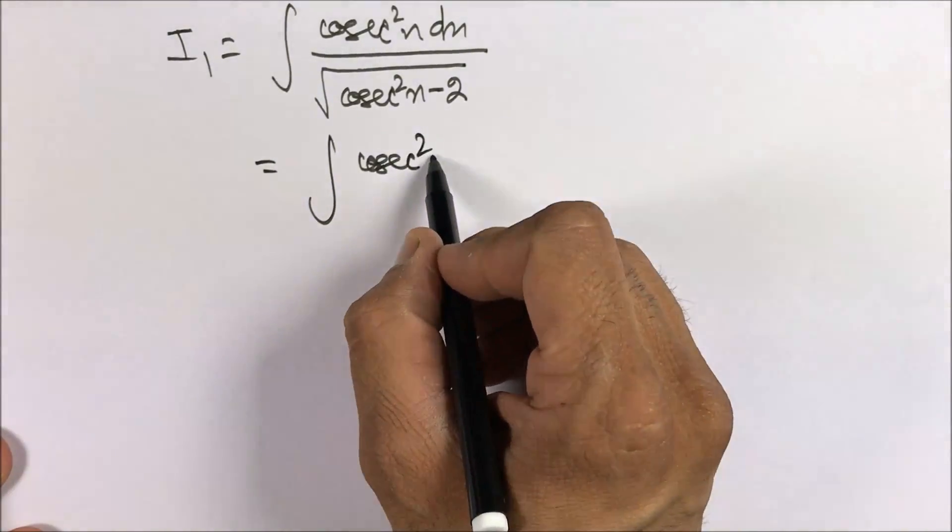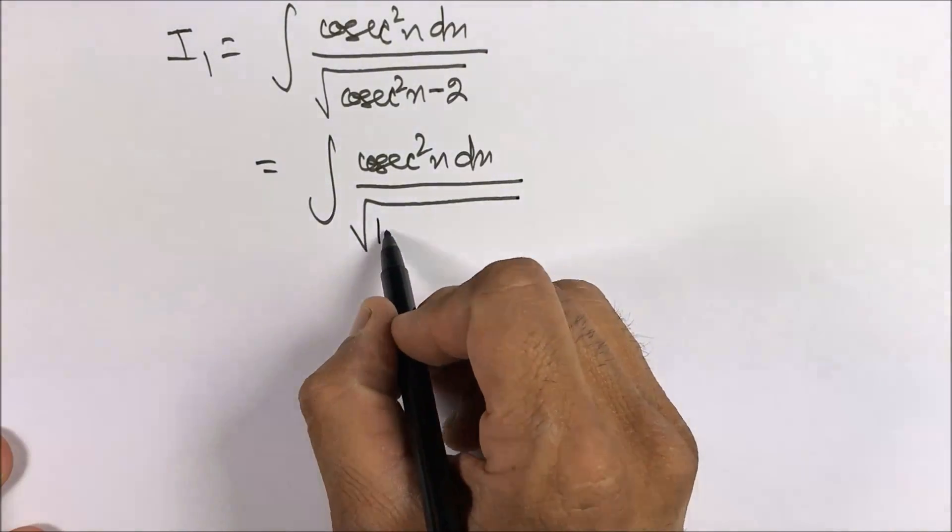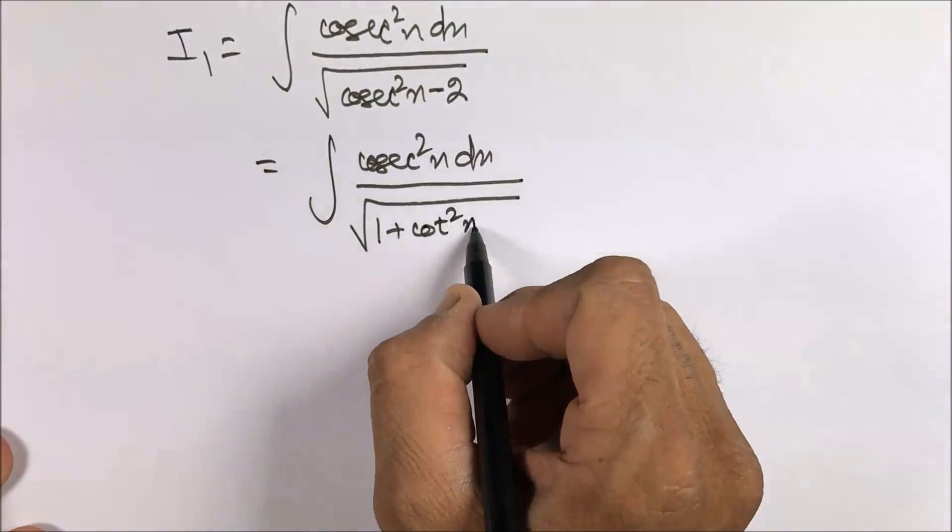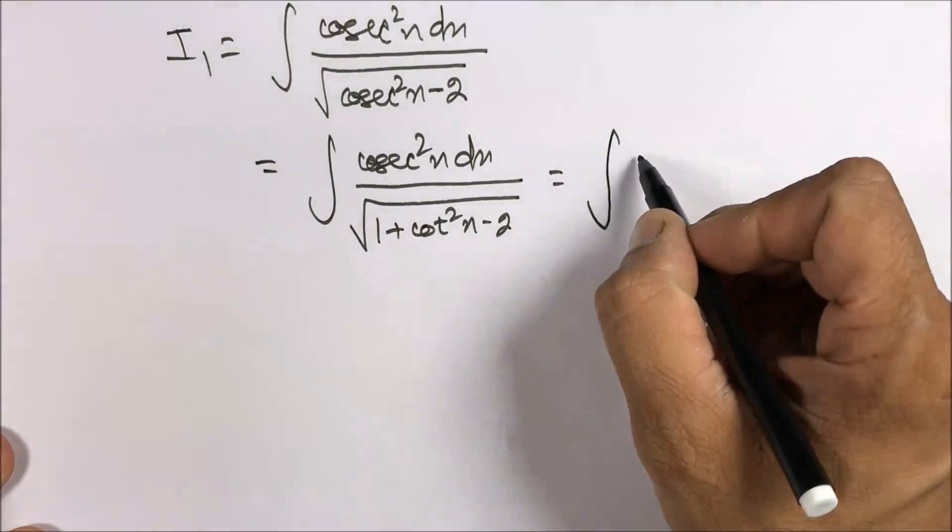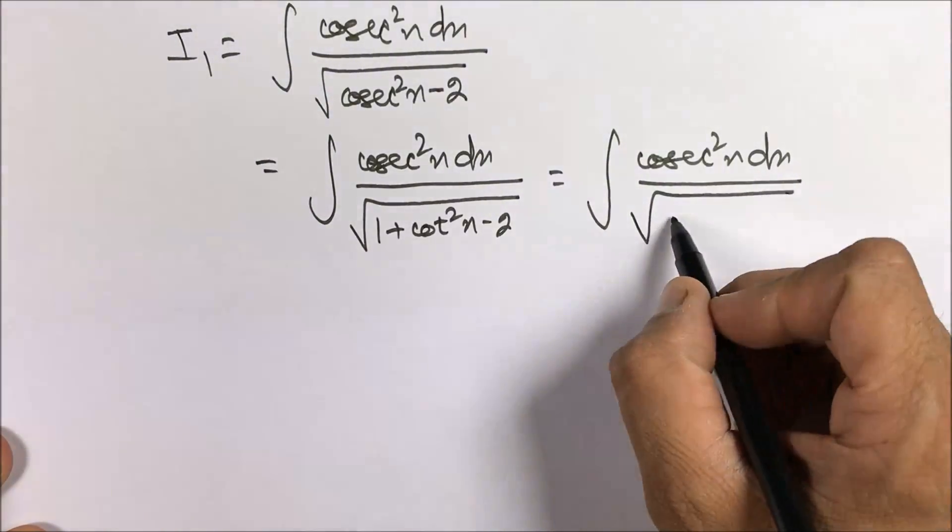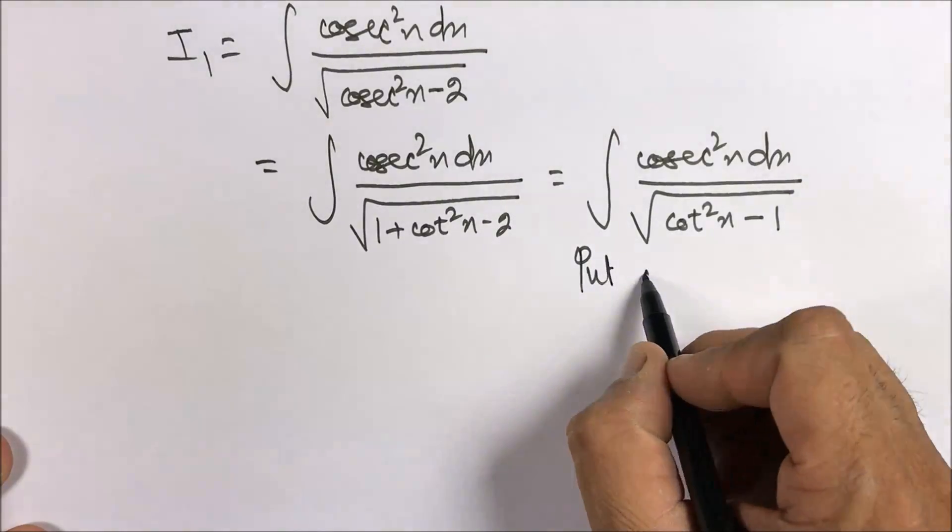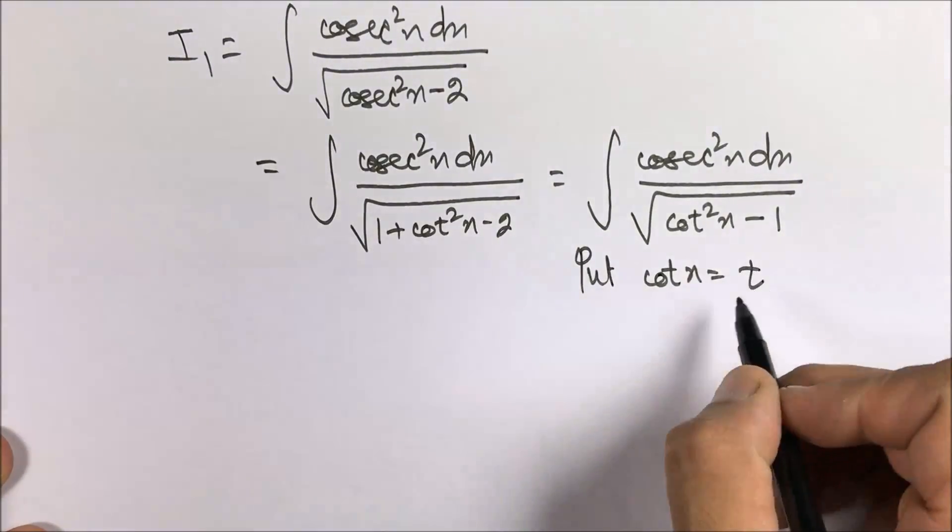And confidently write cosecant square x as 1 plus cot square x minus 2, and that is cosecant square x dx divided by cot square x minus 1.